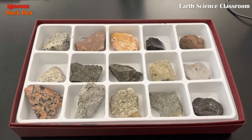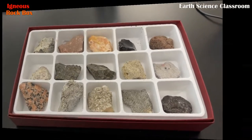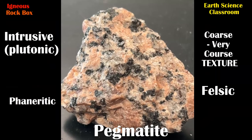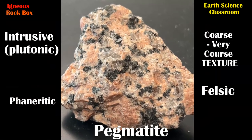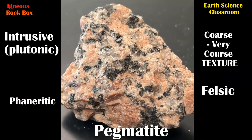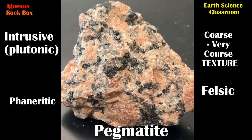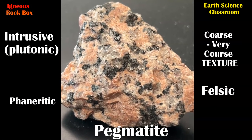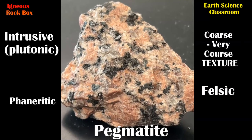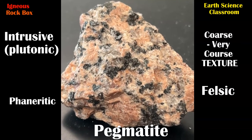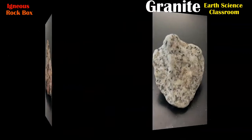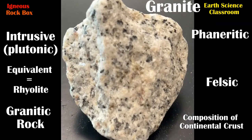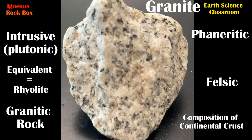We are starting with pegmatite, an intrusive igneous rock — felsic, very coarse, very phaneritic. You can see the visible crystals in this rock. Here we have our very common igneous rock, which is granite. It's intrusive, phaneritic with smaller crystals and coarse, and of course it's felsic.